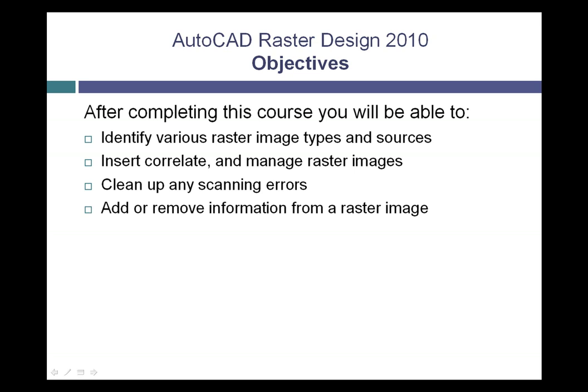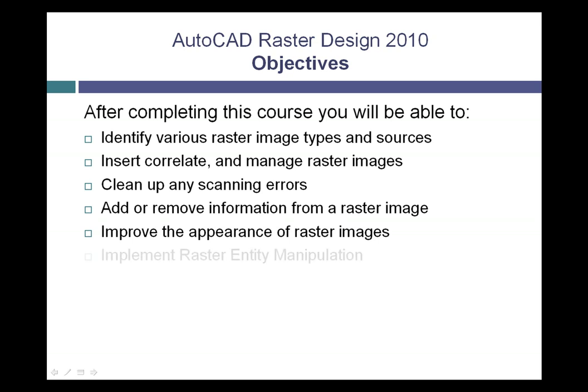You'll learn how to perform basic edits on various types of raster images. And especially if you're working with color images, you'll learn how to adjust things such as the brightness and contrast. You'll also learn how to use a tool called raster entity manipulation, which allows you to edit portions of a raster image using normal AutoCAD editing tools such as move, rotate, and copy.